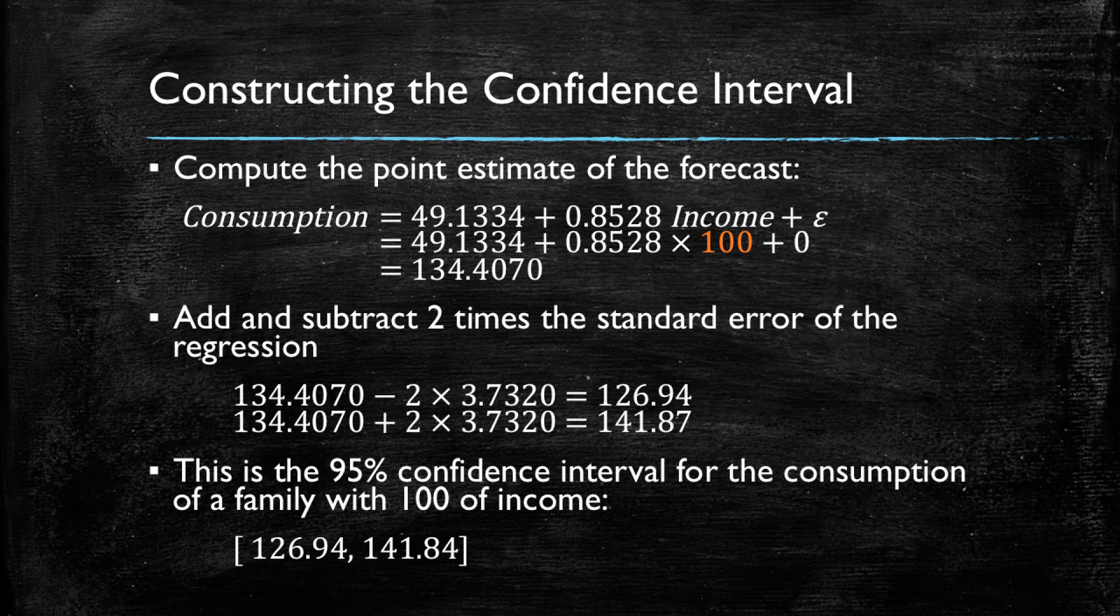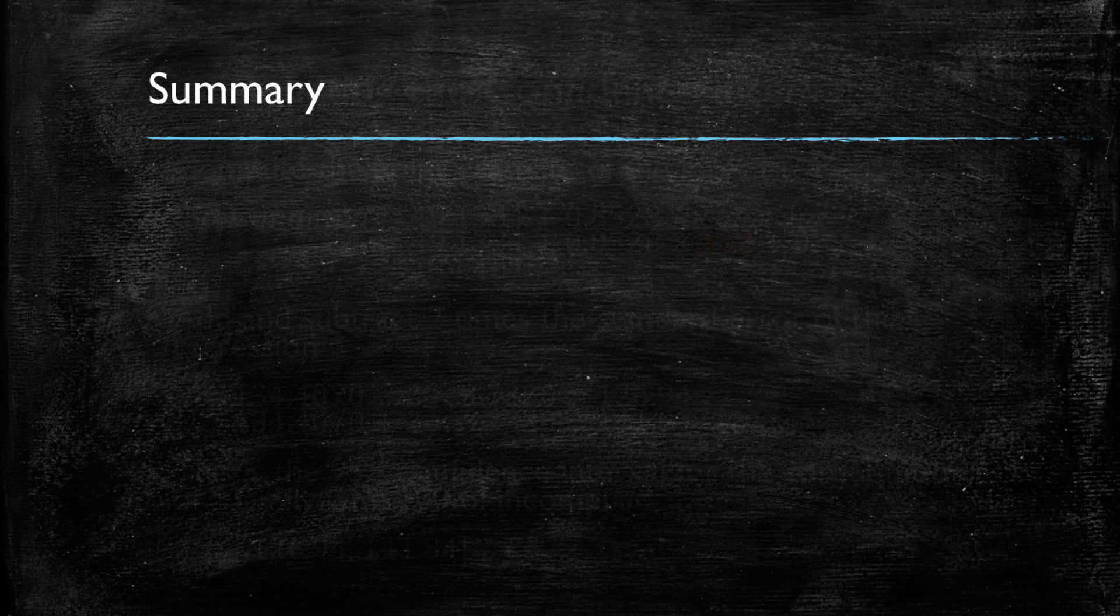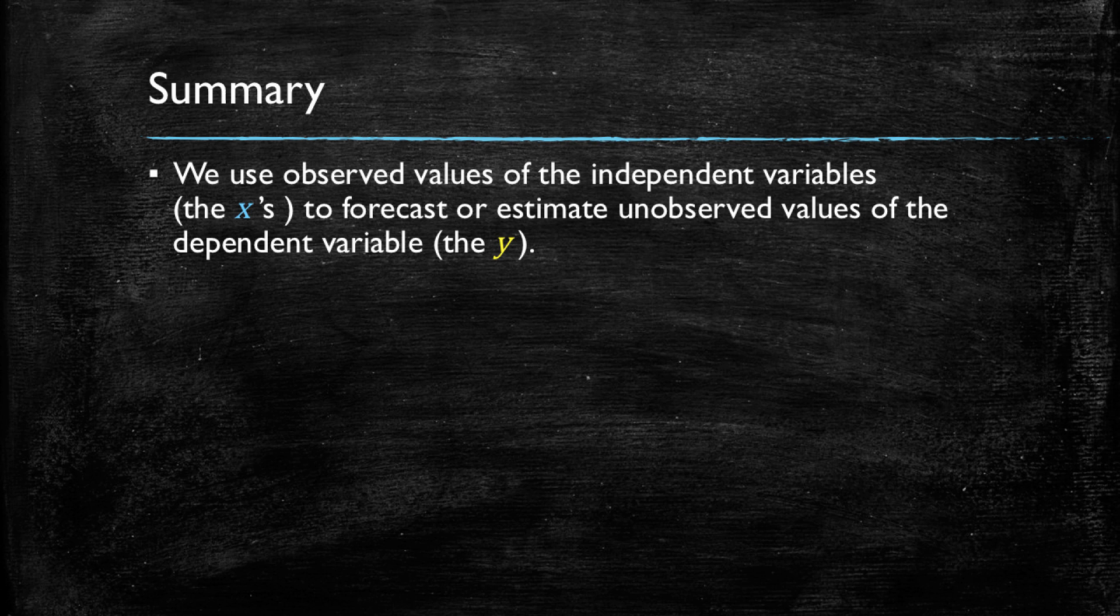So let's summarize what we have learned in this video. First, we learned that we can use the observed values of the independent variable to forecast or estimate unobserved values of the dependent variable. Of course, before doing this, we must assess the validity of our model in being able to explain the variance in the dependent variable, the y. And we did this by means of the standard error of the regression or the r-squared of the regression, as we learned in the previous video.